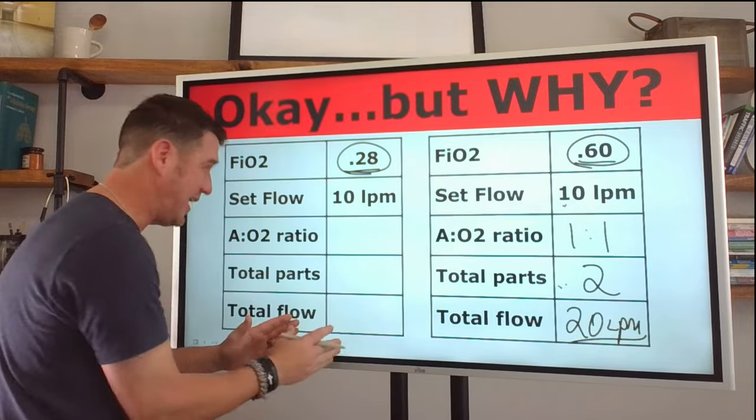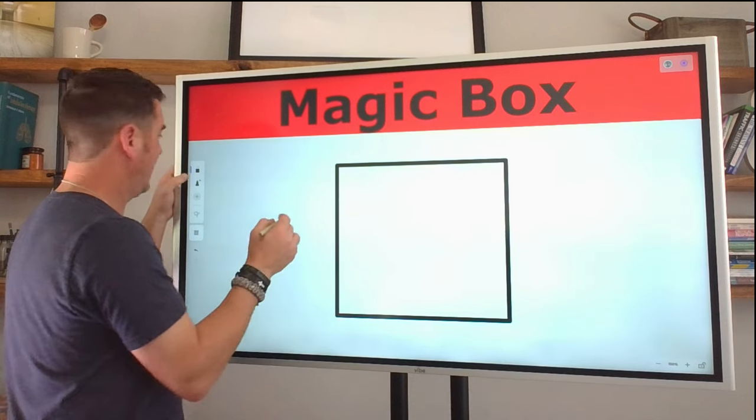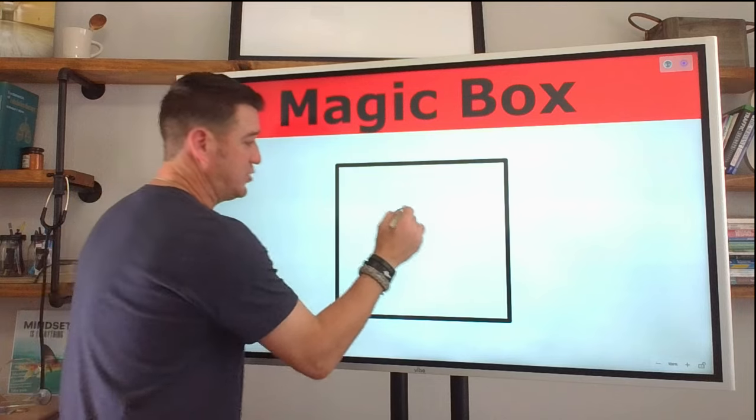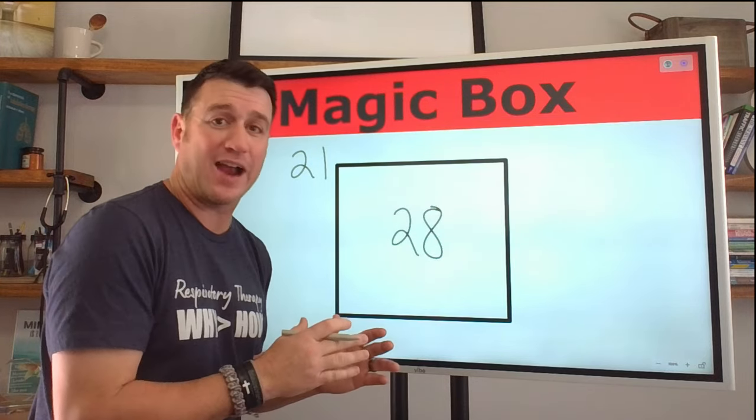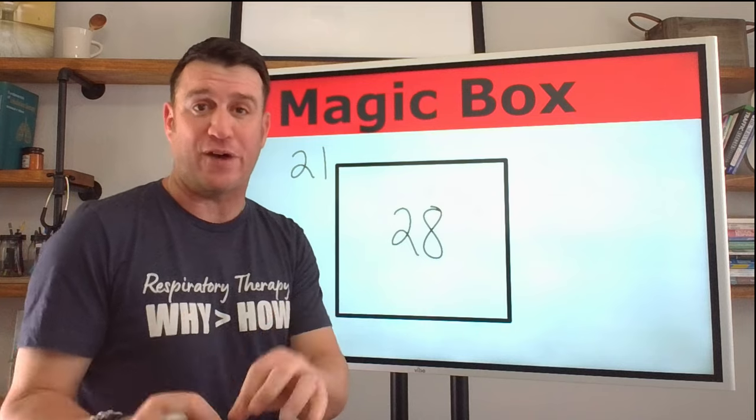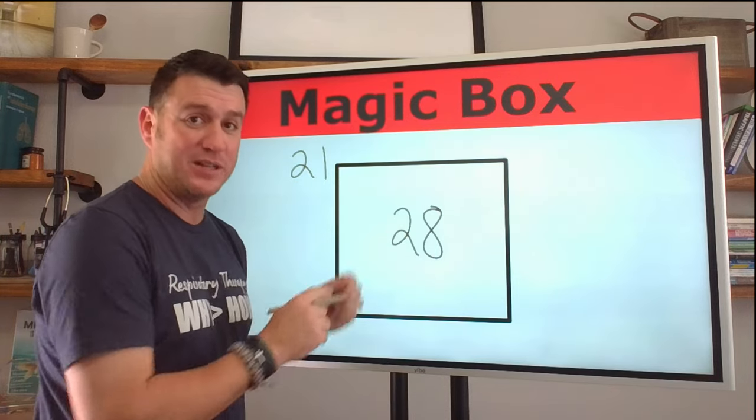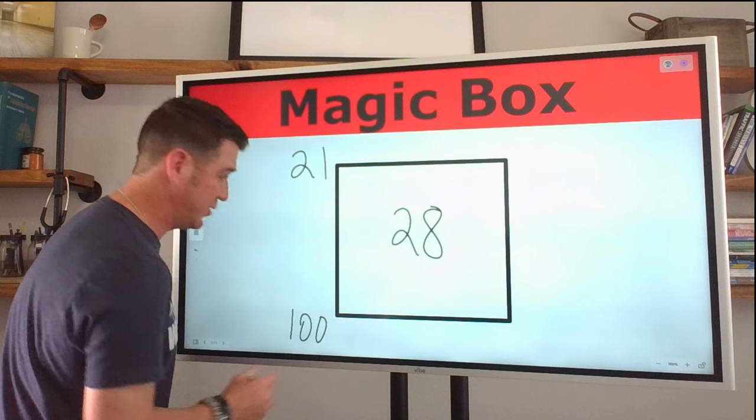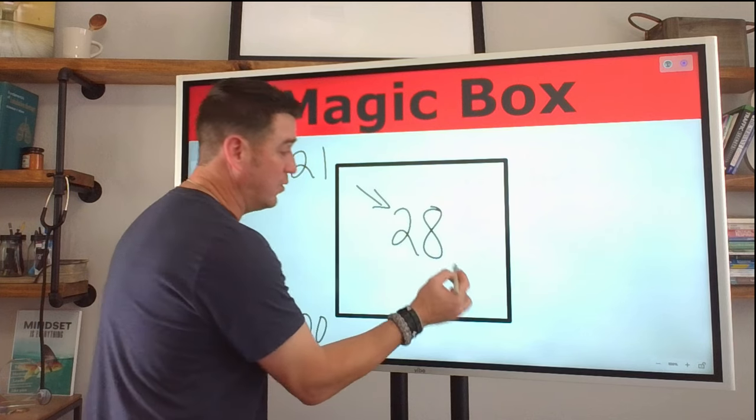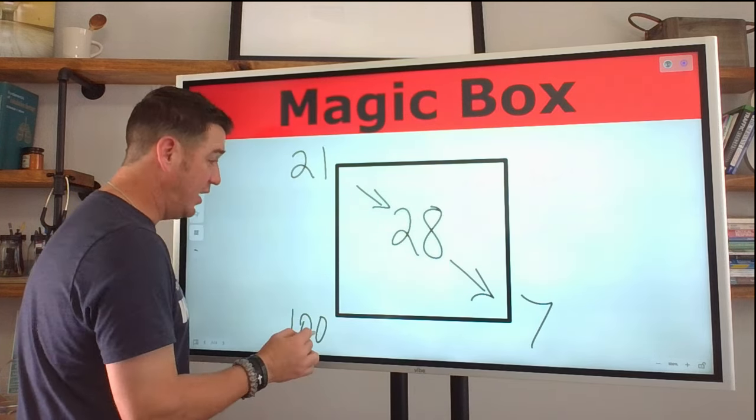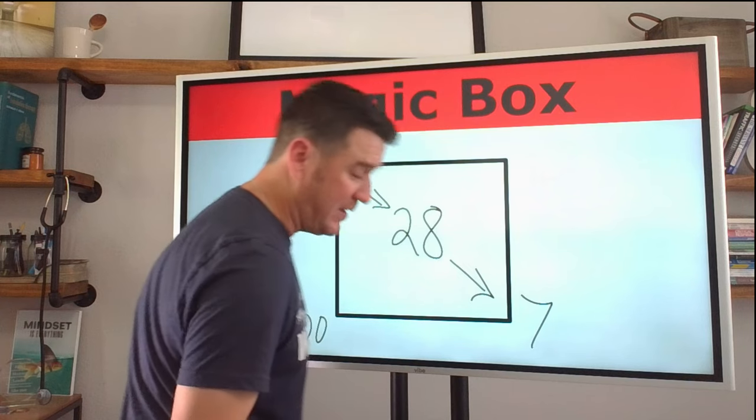Now we need to come back over here and do this side over here. So 28%, let's go back and do 28% here. So we're going to put 28 right here. This time we're going to put 21 right here, because the lower you get down to room air, the more accurate it will be if you will use 21. So anything 35% or less, you will get a more accurate number. If you utilize 21 in that top left corner, this always is 100. So we say, okay, well, what's our math here? 21 minus 28 equals negative seven. We don't pay attention to the negative 100 minus 28 equals, I believe, 72, 100 minus 28 is 72.